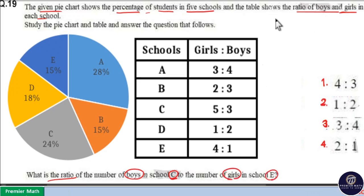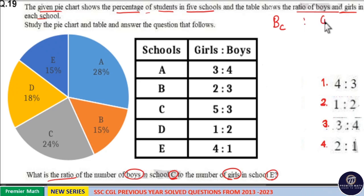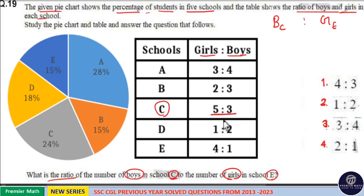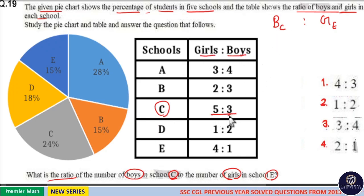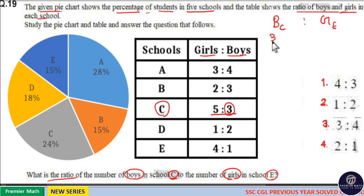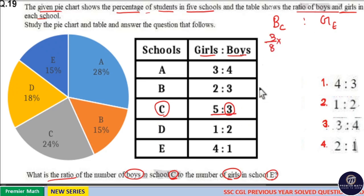We need the ratio of boys in school C to the girls in school E. In school C, the ratio of girls to boys is 5 is to 3. We need the boys ratio in school C. Boys are 3 parts out of a total of 3 plus 5, which is 8 parts. So the boys ratio is 3 by 8.